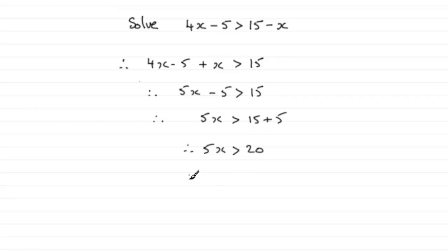Now just divide both sides by 5, and that's going to leave us with x is greater than 20 divided by 5. In other words, x is greater than 4.